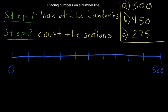So we've got 1, 2, 3, 4, 5, 6, 7, 8, 9, 10. So that means 0 to 500 divided by 10, so 500 divided by 10.